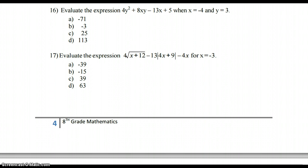Same deal for number 17 here. Plug in what we've got. We only have to plug in stuff for x. So 4 times the square root of negative 3 plus 12 minus 13, 4 times negative 3 plus 9, and minus 4 times negative 3. They're making us work for these evaluation problems here. So parentheses would include absolute values and square roots.